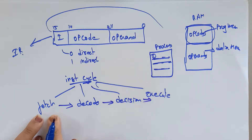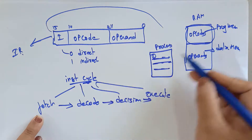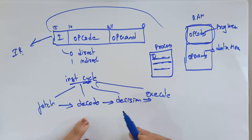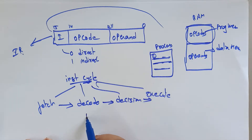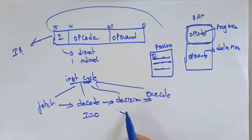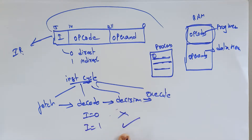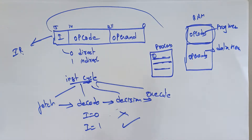In each stage: first, fetching the data from memory (from RAM); then decoding it; then the decision stage — when i equals zero there is no need for a decision and execution goes directly. When i equals one, indirect addressing is used, so a decision is required to select the correct address before execution.